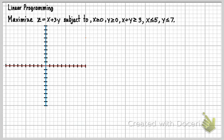And then x plus y equals 3 is going to go through the points (0,3) and (3,0). And then x equals 5, that's going to be a vertical line at x equals 5.